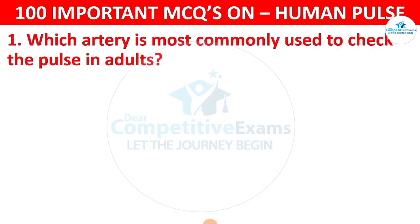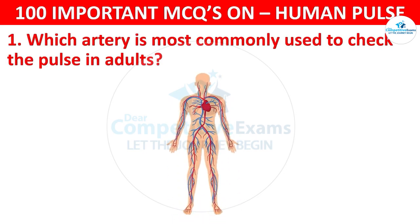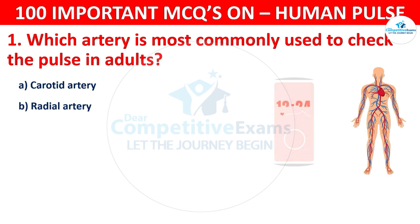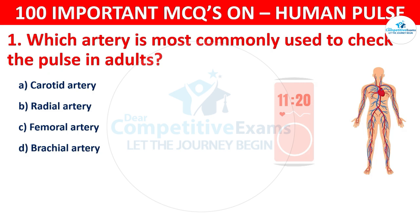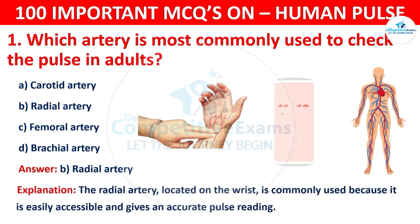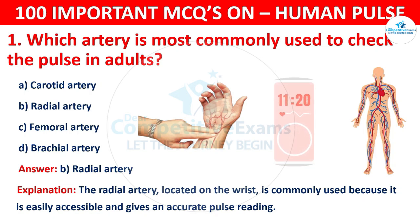Which artery is most commonly used to check the pulse in adults? The options are: Carotid artery, Radial artery, Femoral artery, or Brachial artery. The correct answer is B, that is the radial artery. The radial artery is located on the wrist, which is commonly used because it is easily accessible and gives an accurate pulse reading.